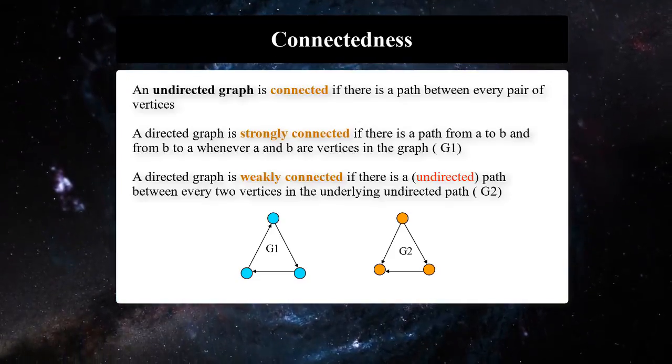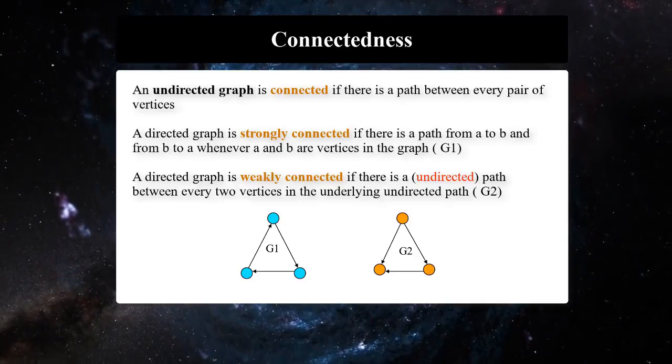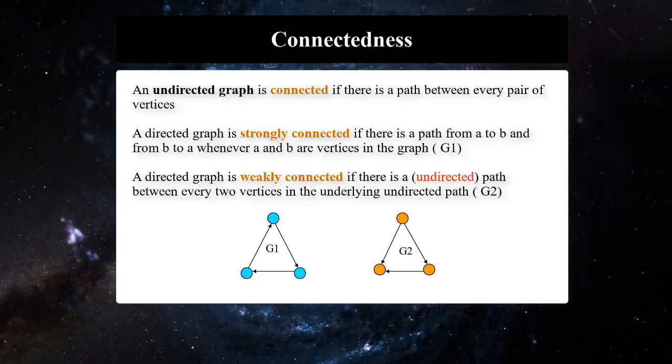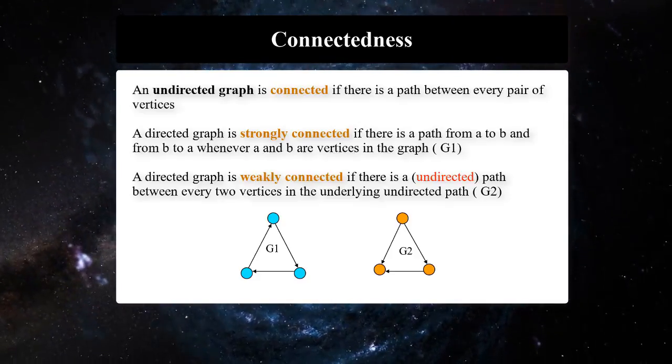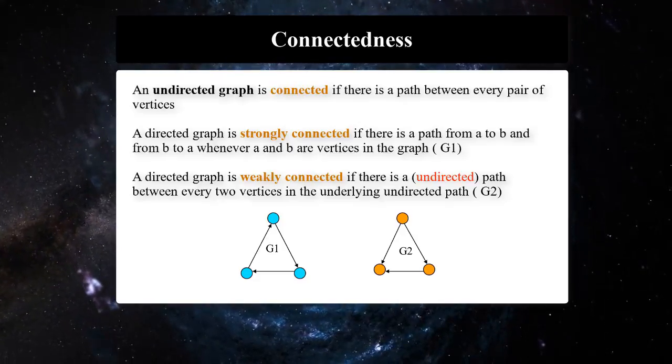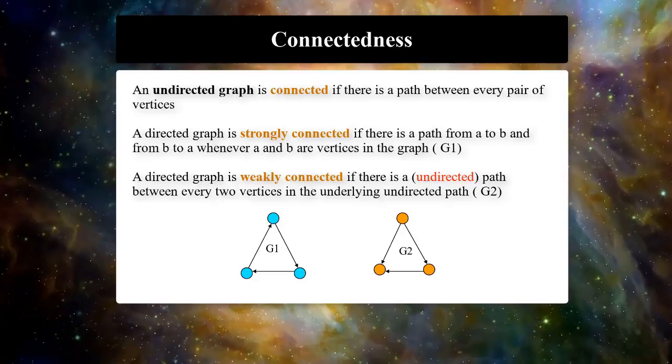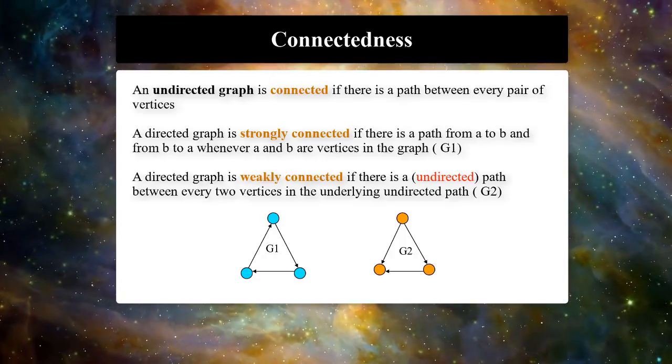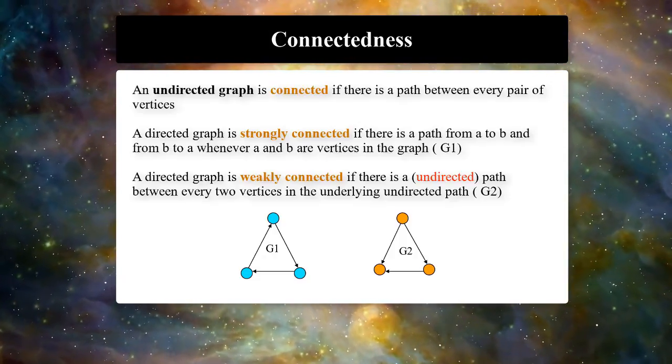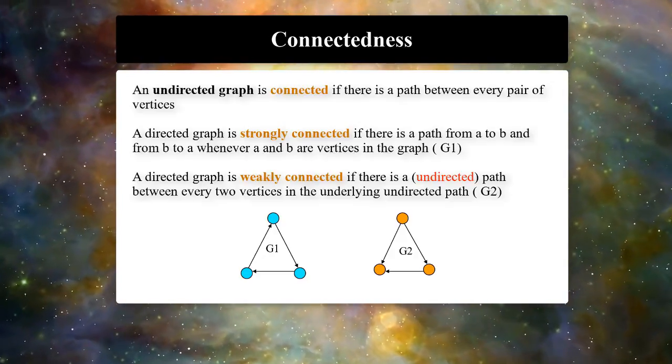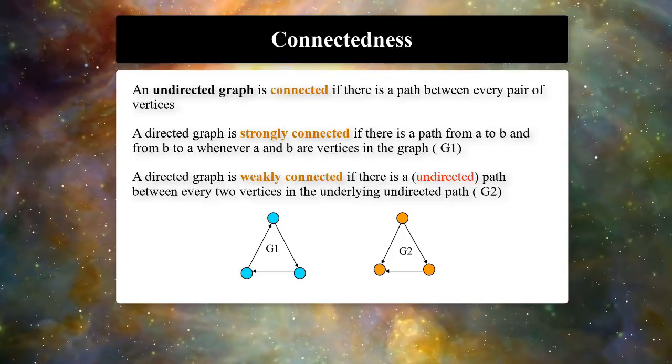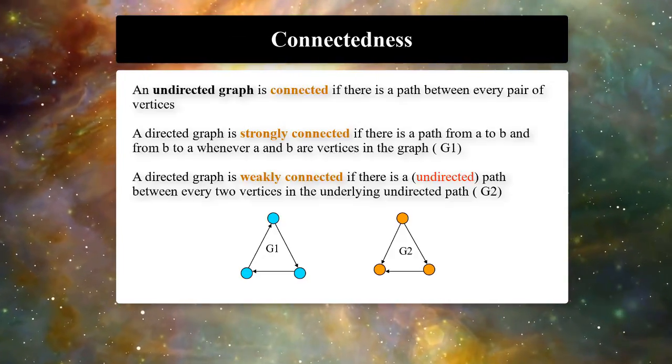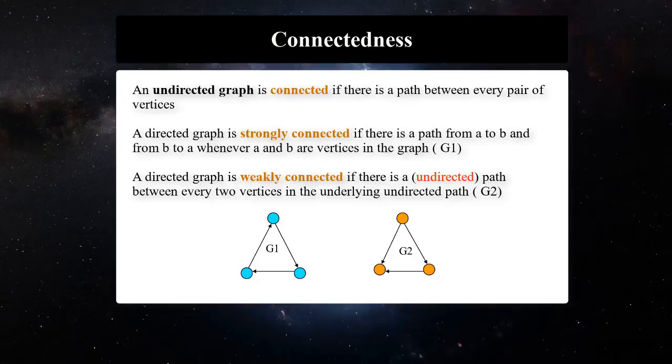A directed graph is weakly connected if there is an undirected path between every two vertices in the graph. Which graph is strongly connected, G1 or G2? A strongly connected graph can be weakly connected, but the vice versa is not true.